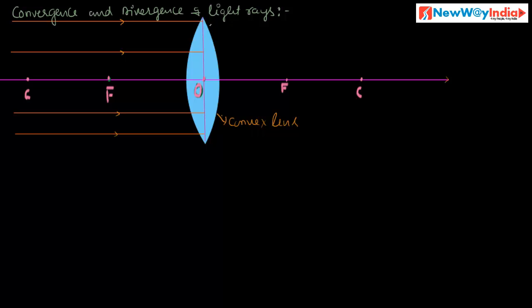The refracted rays — the deviated rays — meet at this point. These rays meet at one single point. This is called convergence. These refracted rays meeting at one single point is called convergence of light rays.